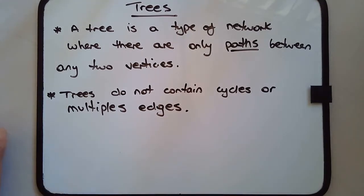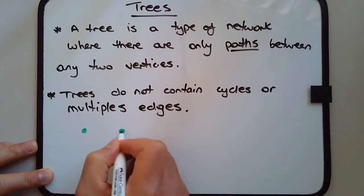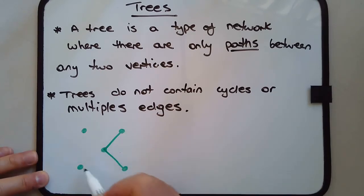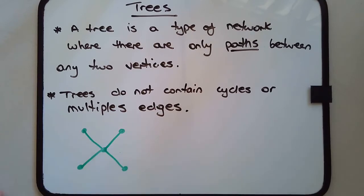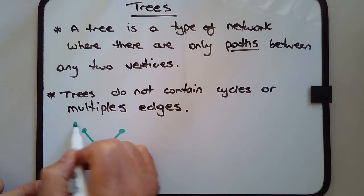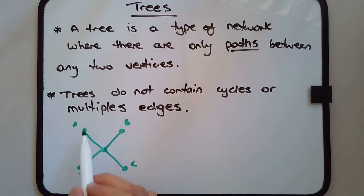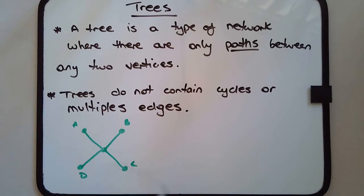Let's draw some examples of trees. Here's one — that would be a tree. Choose any two vertices; for example, A and C, there's only one way to get there. To go from A to B, there's only one way to get there. It's not like there are multiple ways of going between any two points.